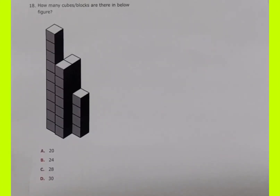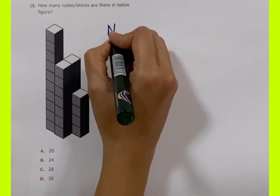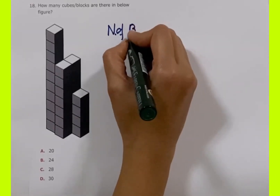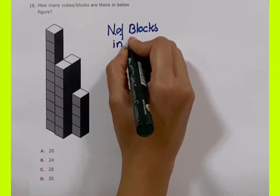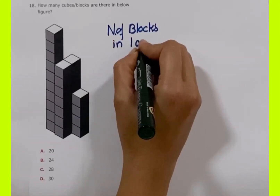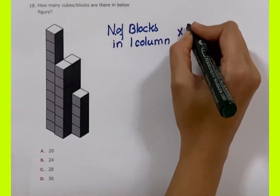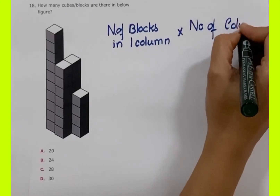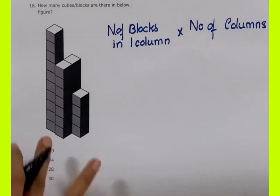How many cubes or blocks are in this figure? To count that, we have to check the number of blocks or cubes in one column, then multiply with its number of columns. This is the formula to remember to find the number of cubes.